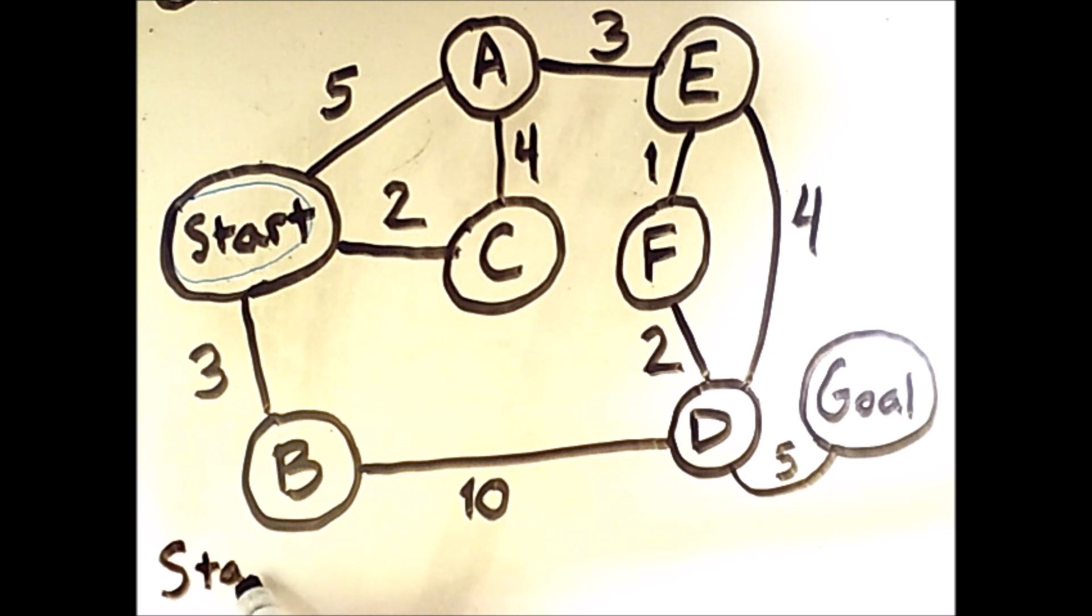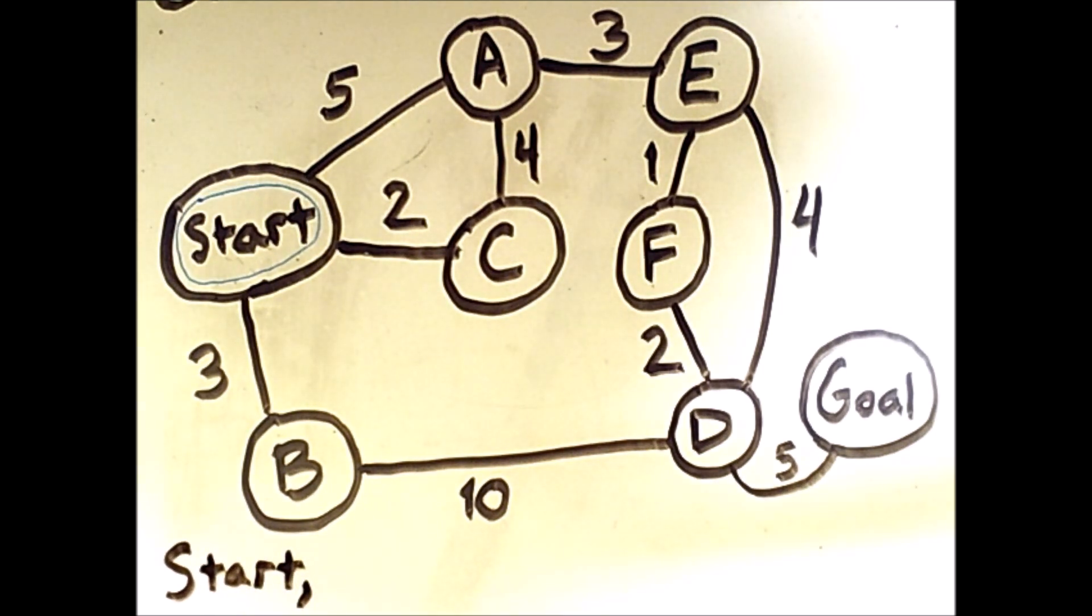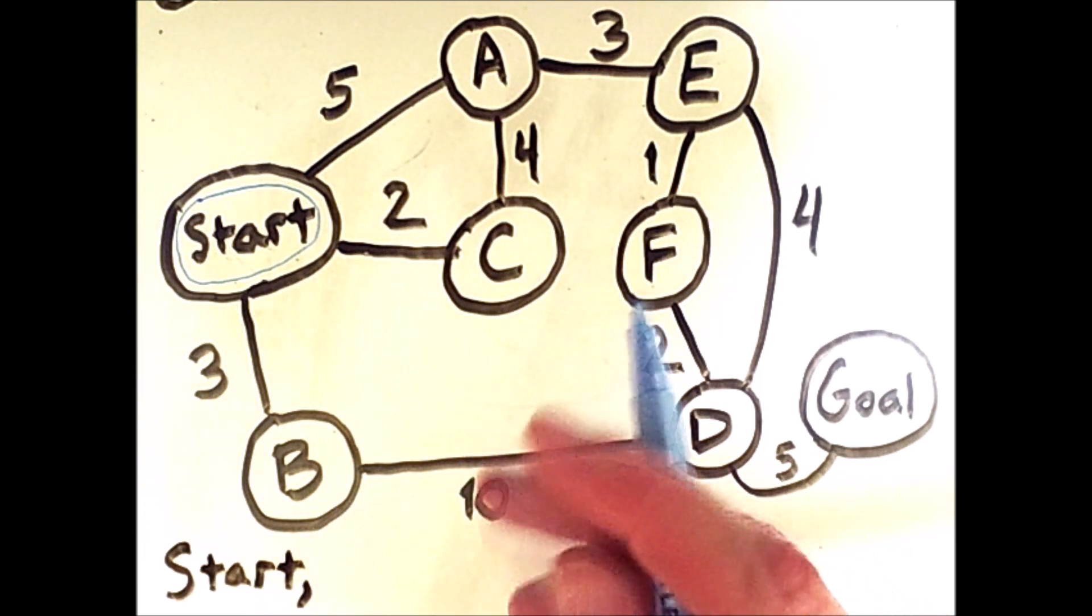So I'll track down here the states that we have officially searched. So we search the start state, and once we have searched the start state, we will put all of the neighboring states onto the fringe.